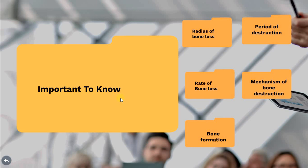The height and density of the alveolar bone are normally maintained by an equilibrium regulated by systemic influences between bone formation and bone resorption. When resorption exceeds formation, both the height and density of the bone will be decreased. The most common cause of bone destruction in periodontal disease is the extension of inflammation from the gingival margin into the supporting periodontal tissue. The bone surface and the initial bone loss mark the transition from gingivitis to periodontitis.